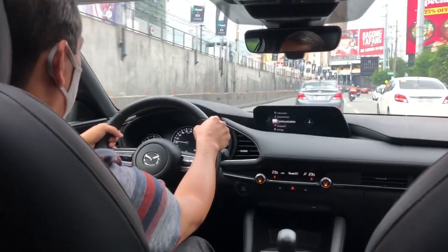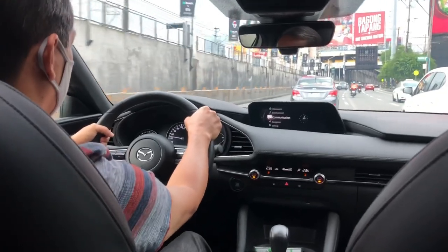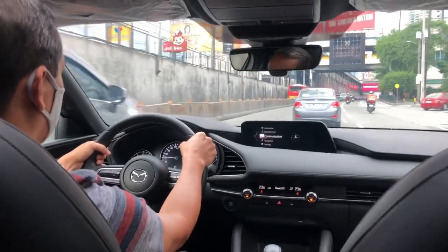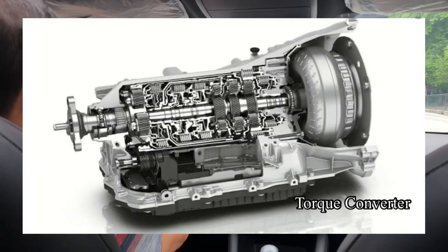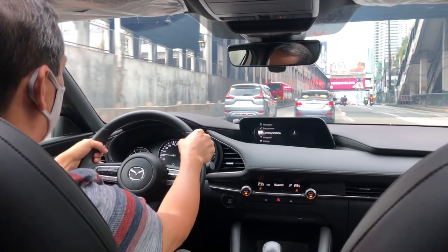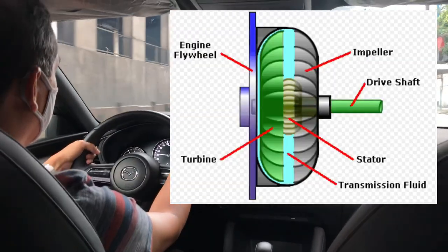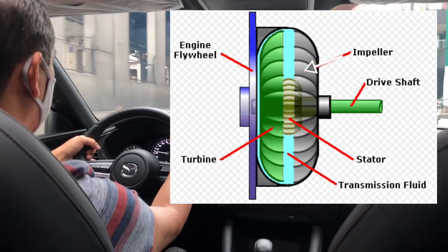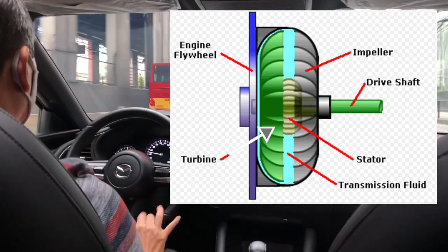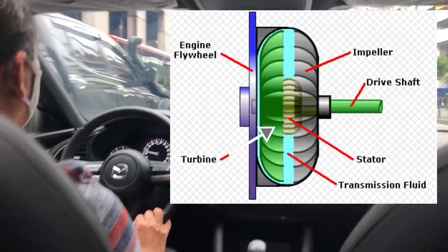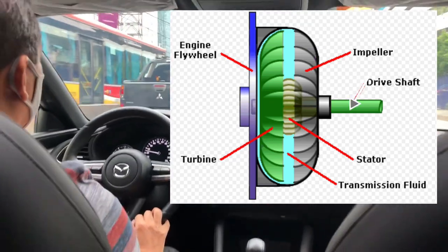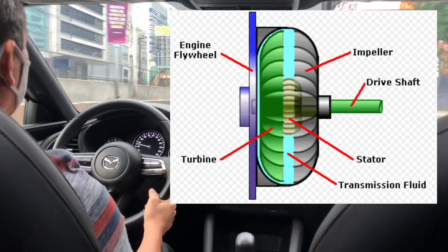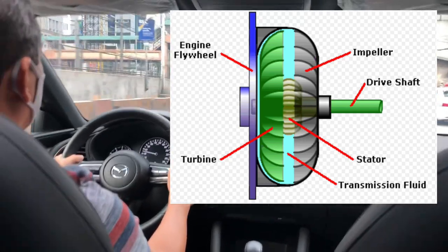Now let's talk about automatic transmission. In an automatic transmission, the car changes the gear for you — there's no clutch pedal. Instead of a clutch, there is what we call a torque converter. Inside the torque converter are two pan-shaped components filled with transmission fluid: an impeller (or pump) and a turbine, which is attached to the transmission input shaft.